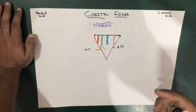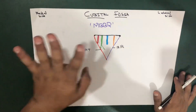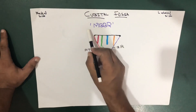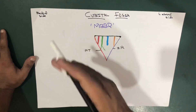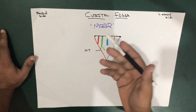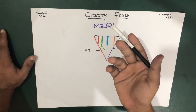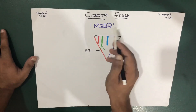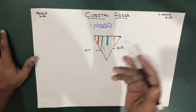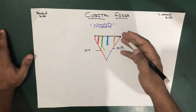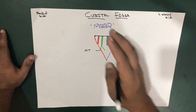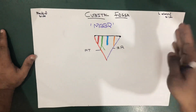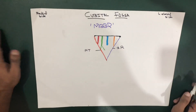The cubital fossa has four contents, and it's easy to remember using the formula MBBR. If you know MBBS — the medical degree — just remove the S and put R, giving you MBBR. From medial to lateral side, just remember MBBR.